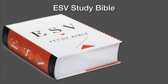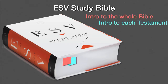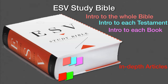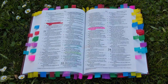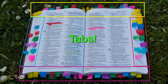The ESV Study Bible, like many others, features front matter that introduces the Bible, each testament, and each book, and end material that rounds out its basic page layout — in-depth articles, a concordance, and an atlas. And of course, let's not forget the optional tabs we can add to access all that additional material quickly.